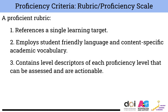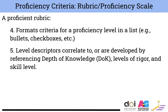A proficient rubric is going to reference a single learning target. It's going to employ student-friendly language as well as content-specific academic vocabulary. It's going to contain level descriptors of each proficiency level that can be assessed and are also actionable. It will include criteria that is formatted in a list, and the level descriptors are going to correlate to or will be developed by referencing depth of knowledge, levels of rigor, and skill level.